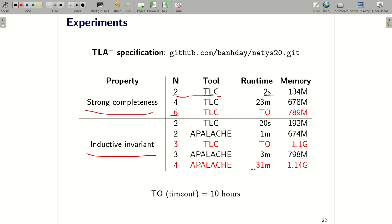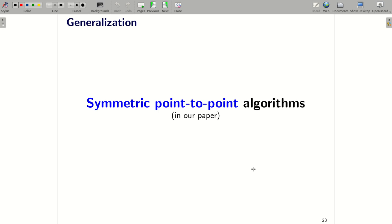And the most important thing in our paper is that we can generalize our cutoff result. So in our paper, we define a new class of distributed algorithms called symmetric point-to-point class. And our cutoff result can be applied to verify every algorithm in this class. Because the formalization is very technical, I will not present this definition in this talk, so you can find it in our paper.